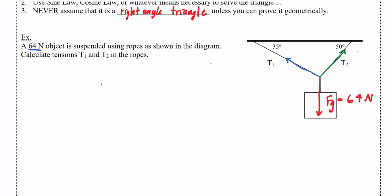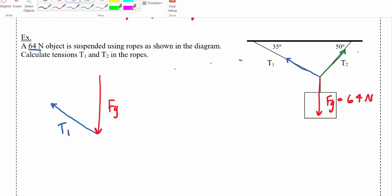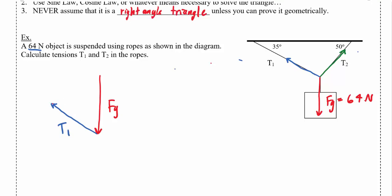Using the closed vector diagram method, I'm going to add all the forces together. I'll start with Fg straight down, then add T1 where that finishes off, and then add T2 where T1 finishes off. If all my forces add up to zero, I should end up right back where I started — all the forces add up to nothing overall. We know this side is 64 Newtons.